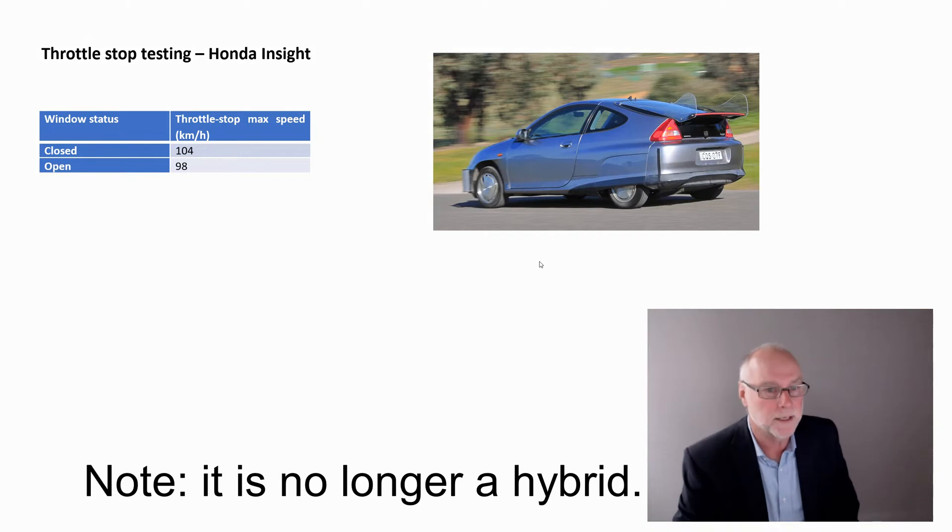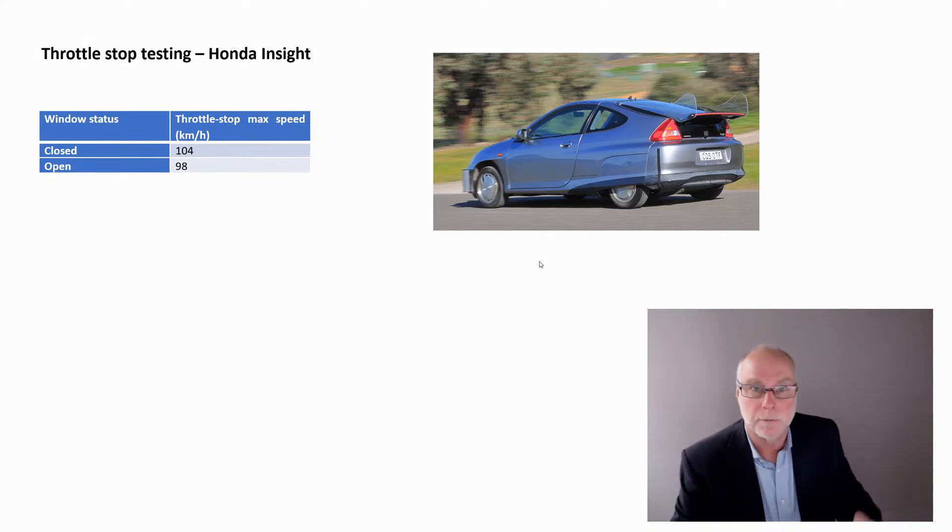With the little Honda pictured here, with the windows closed, the maximum speed with the throttle stop in position was 104 km an hour. With the windows open, the top speed with throttle stop dropped to 98. So it's a clear change in top speed with that change in drag. We increased the drag by putting the windows down, and we changed the top speed quite significantly.